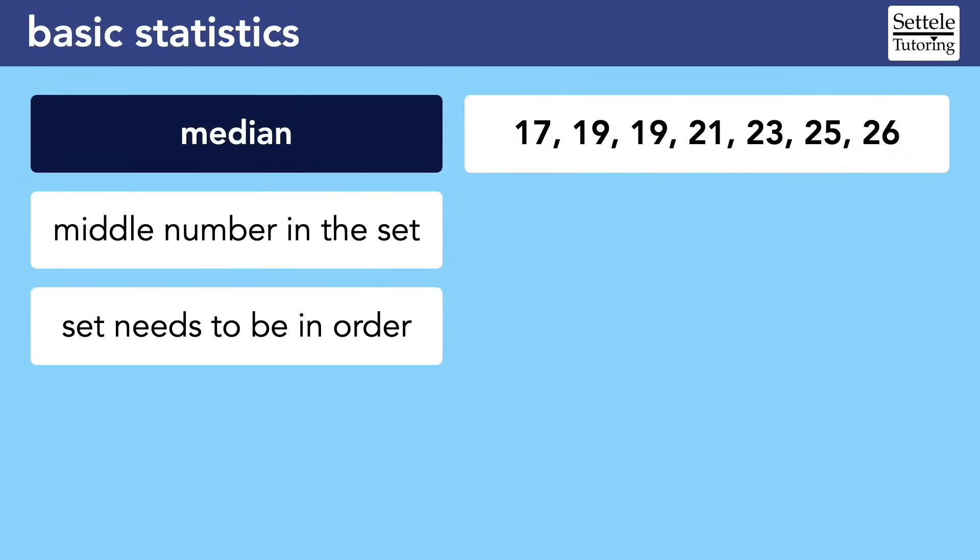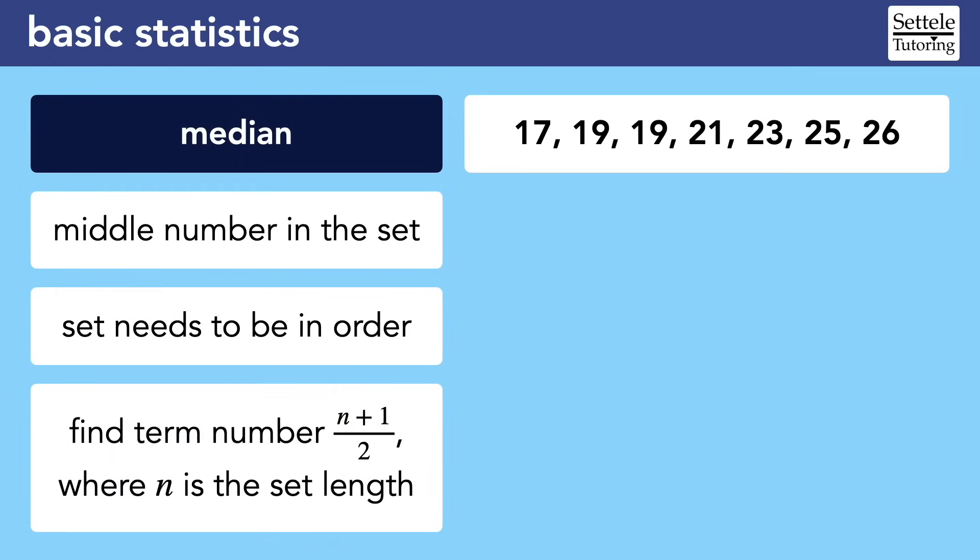There is another way to find the median that is a bit more formulaic. The list still needs to be in order, but instead of counting from both ends, you can count from just one. If n is the number of values in the data set, then you need to count to the term that would be n plus 1 over 2. So in this example, the set has seven terms. Plugging 7 in for n, we get 8 over 2, which is 4. We can count to the fourth term, which is still a median of 21. This method might be more useful when the data set is large, especially when it's presented in a histogram or frequency chart.